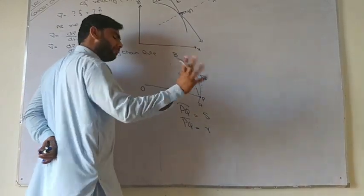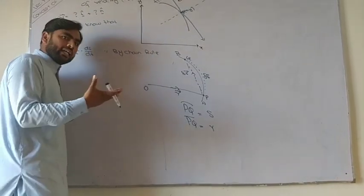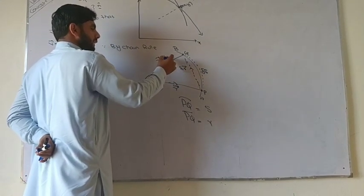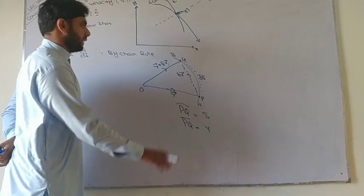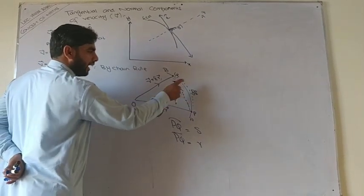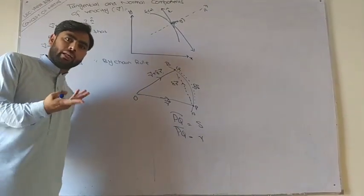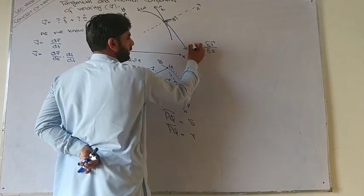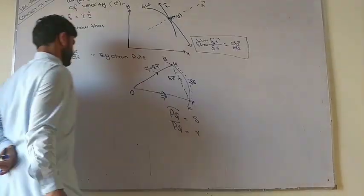So by head to tail rule, the resultant gives us r plus delta r, which we studied in the concept of velocity and acceleration. Now this diagram shows that delta r depends on delta s. If we go to the definition of derivative by limit method, delta r over delta s as delta s approaches zero gives us dr over ds.